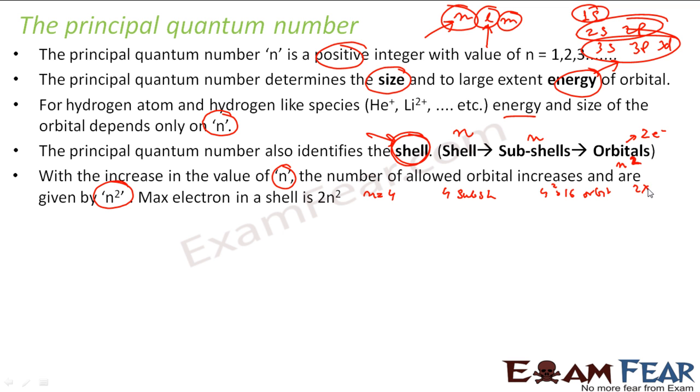And 2 into 4 squared, that is 32 electrons. So the fourth shell will have 4 subshells, 16 orbitals, and 32 electrons. If you're getting confused, just hold on. We will have slides where the doubts will be clear.